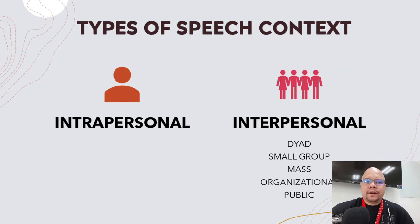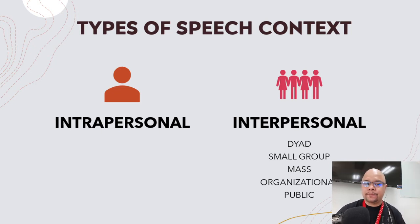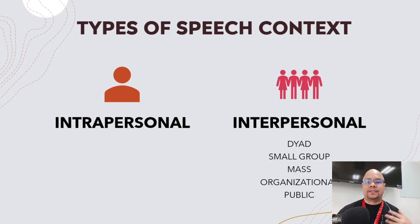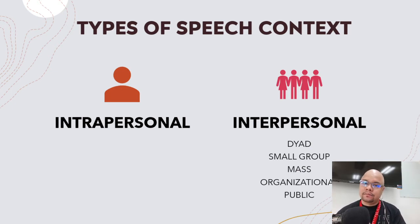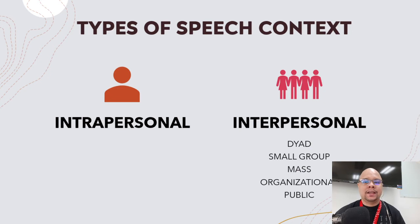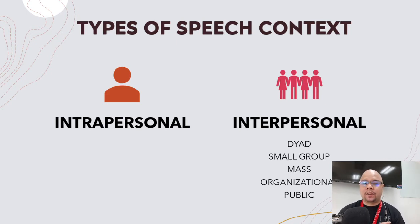When we talk about speech contexts, there are two general types: we have intrapersonal and we have interpersonal. Both these contexts require a speaker or a sender and a receiver, and they are both present in both contexts. However, there is a slight difference in terms of the number of speakers and listeners in each particular context.